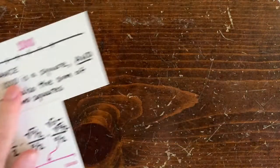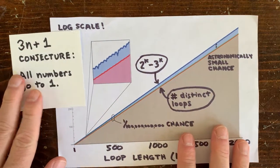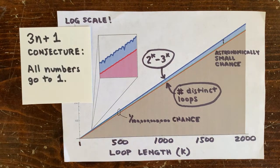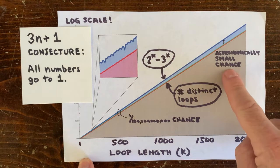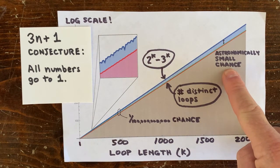And in an earlier episode, we estimated the number of cycles for 3n plus 1. And we found our expectation was that we should be able to count the number of cycles on one hand. Even better, the chance of a cycle of length greater than a thousand was astronomically small. That makes us think that the 3n plus 1 conjecture is true.